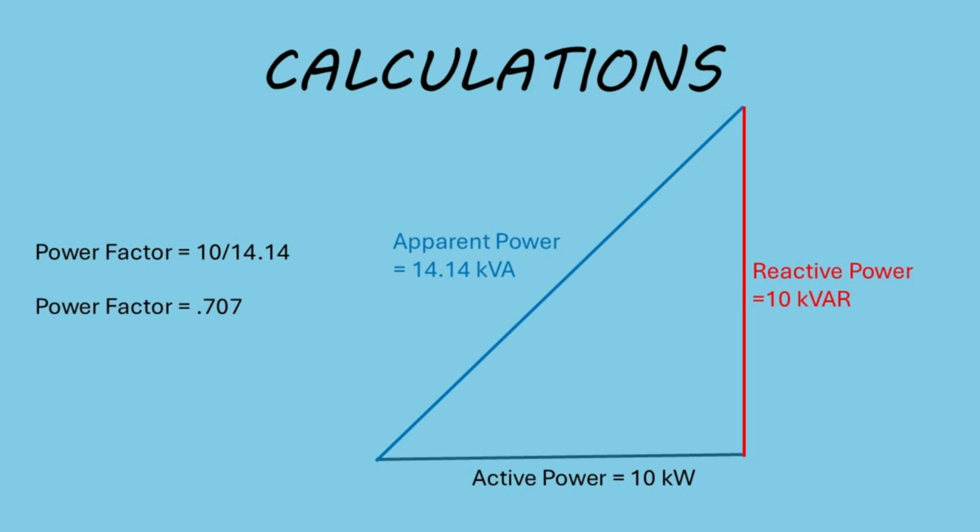So the phase angle here would be 45 degrees, and with a power factor of 0.707, we're wasting about 30% of the energy that the circuit is using.